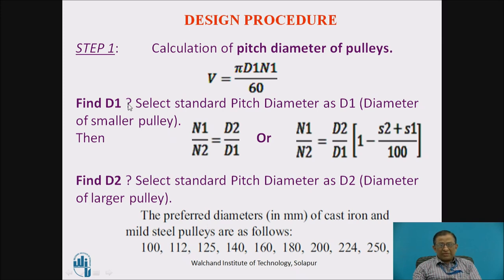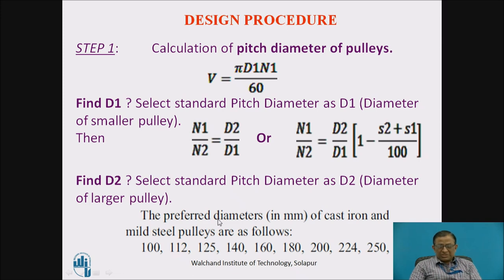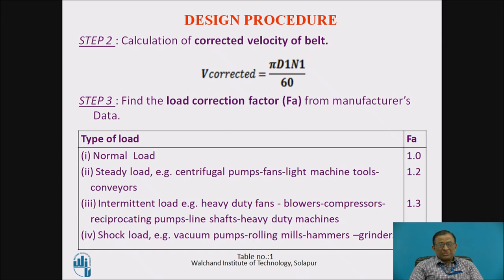For example, if I get a value around 150 mm or 155 mm, I select the nearest standard value such as 160 mm or 140 mm. Then we calculate diameter D2 using the speed ratio equation N1/N2 = D2/D1, where slip is not considered. In some applications, slip at both pulleys is accounted for using an alternate equation. Once again, the standard diameter is selected from the table. This completes the first step of design: deciding D1 and D2.